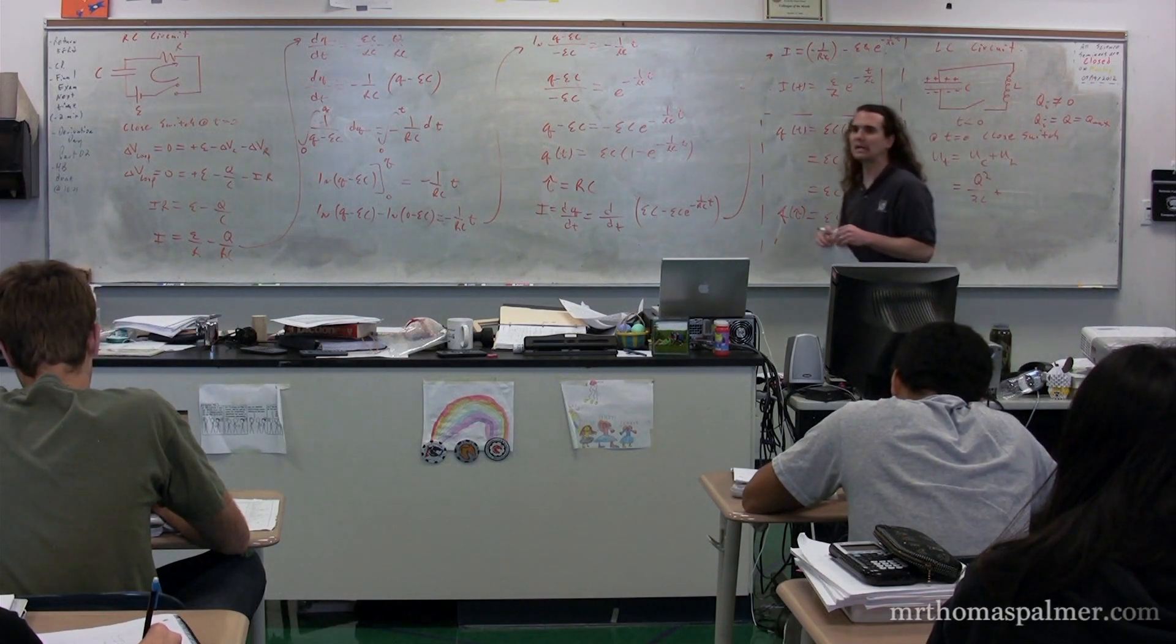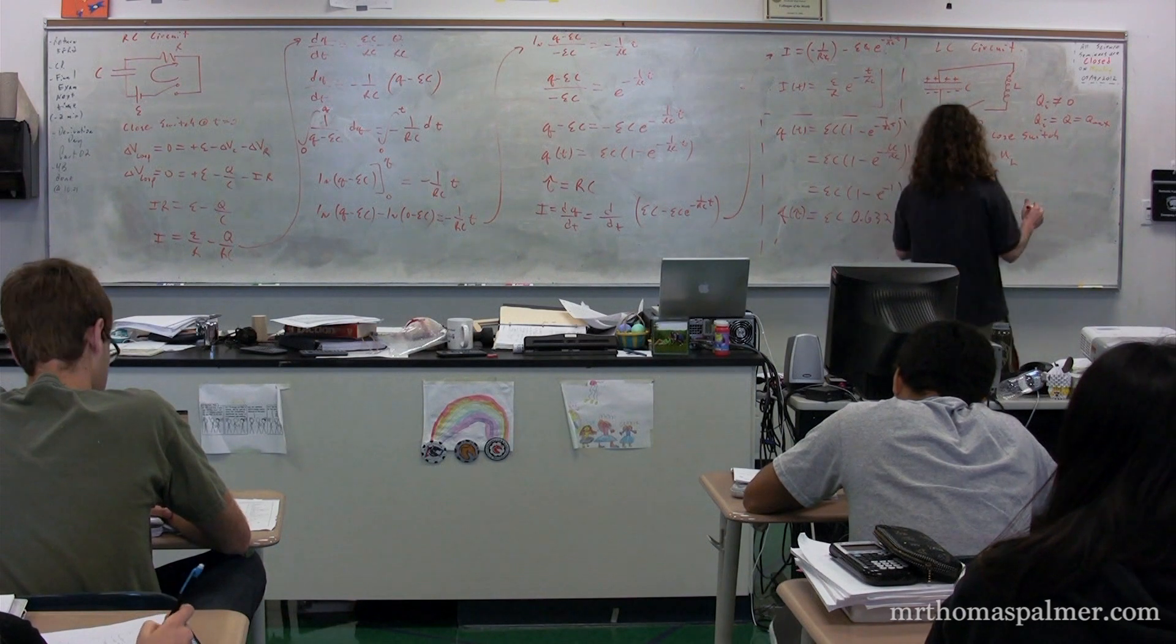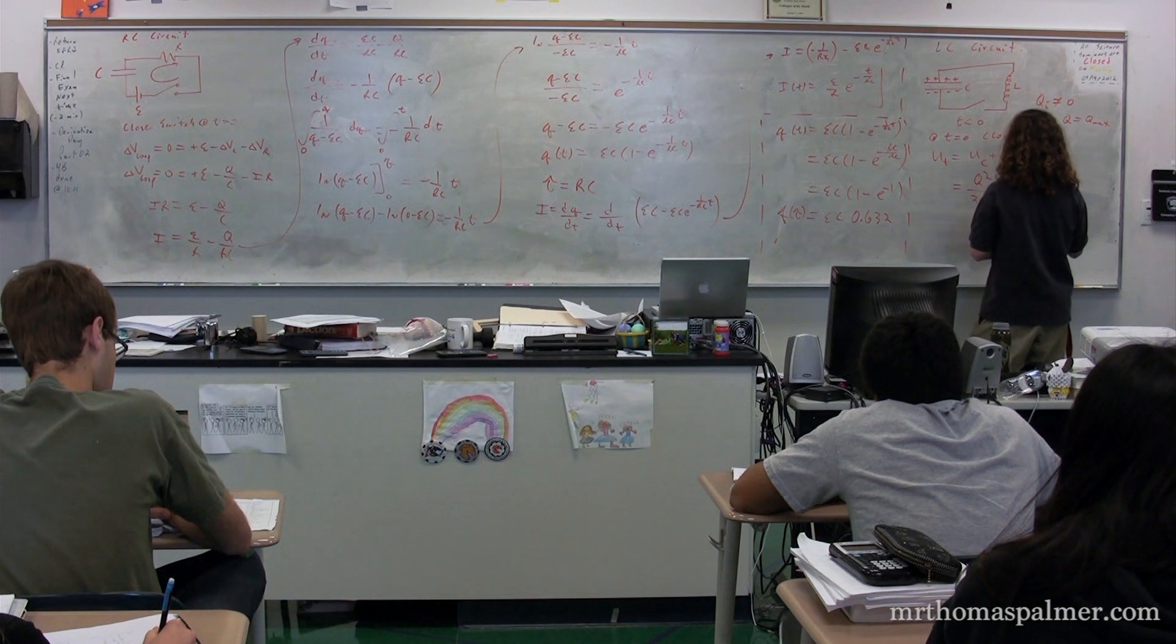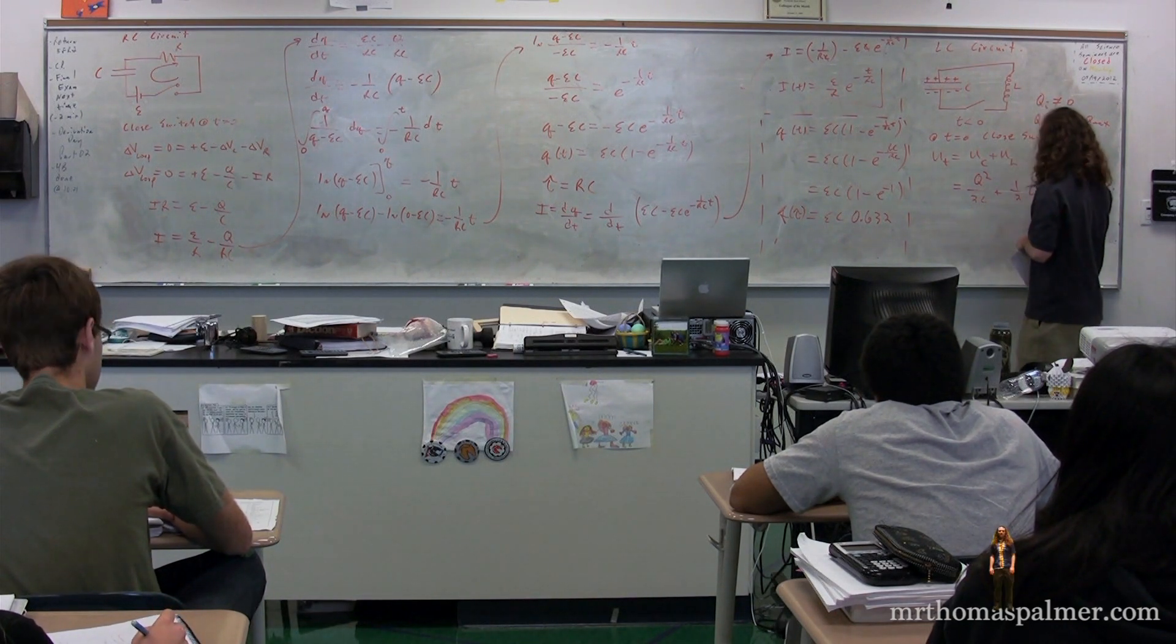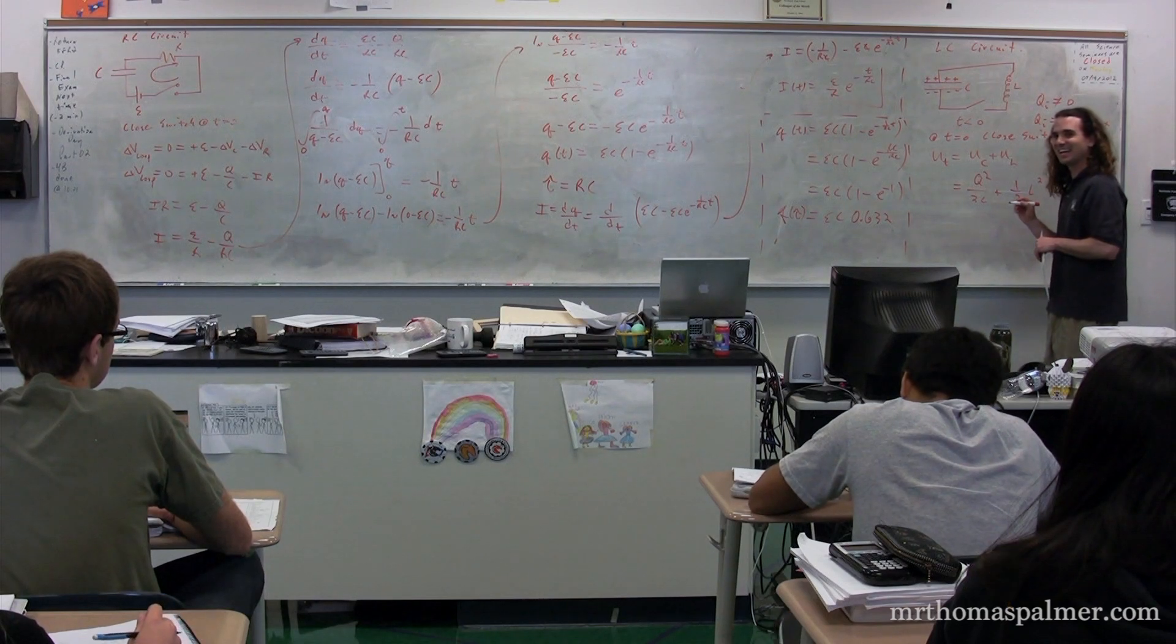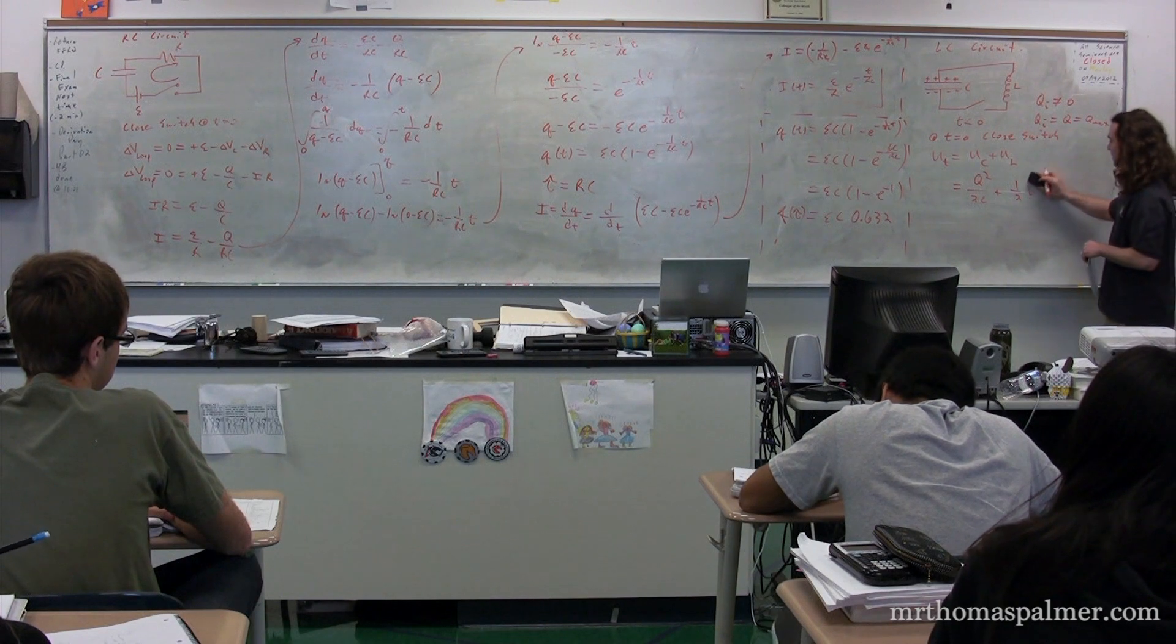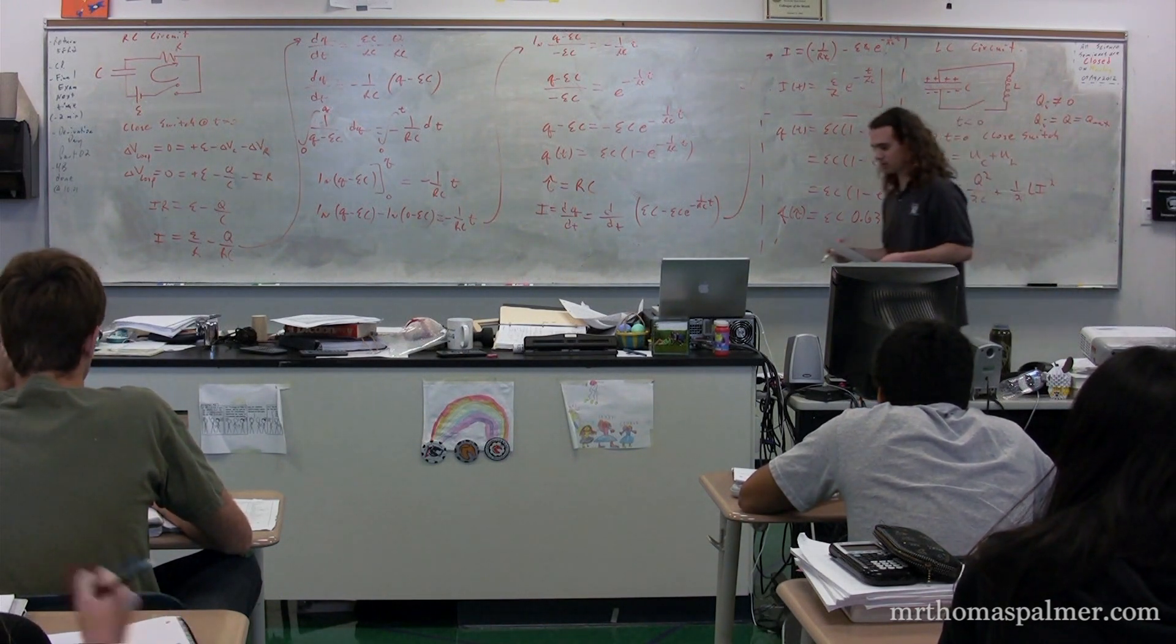Plus the energy stored in an inductor. One half inductance I squared. Sorry, say it again. One half inductance I squared. Or something else. What is it? The current squared. It's L times I squared, the inductance times the current squared.